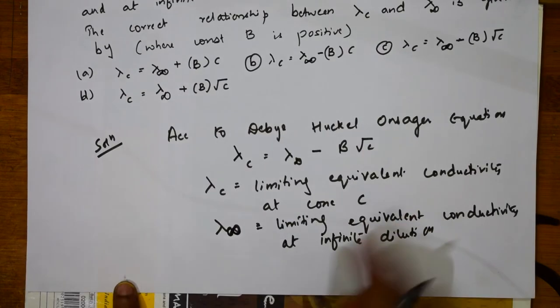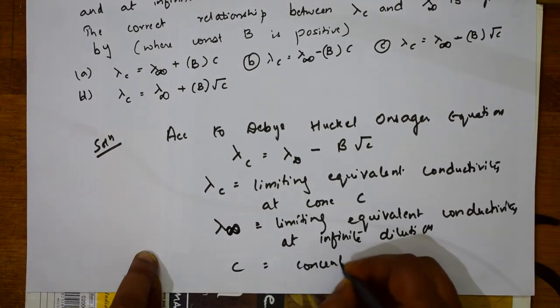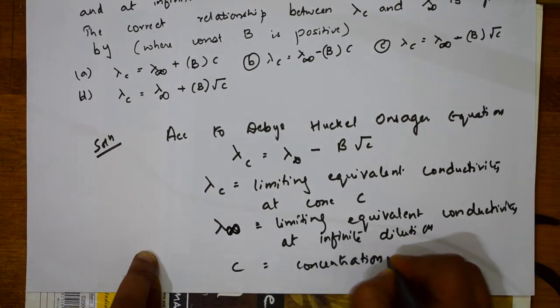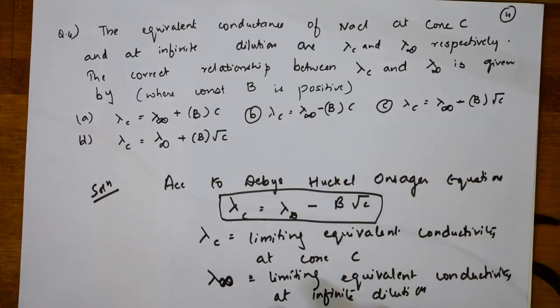What is this? C is equal to concentration. This is the formula. Now simple, isn't it? Come back. They have given already the options. I need to check.